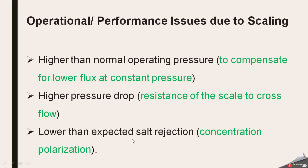Third, lower than expected salt rejection due to concentration polarization. Reverse osmosis involves a concentration gradient across the membrane. When high salt concentration is present on the membrane surface and low salt in the permeate side, more salt passes through the membrane, which reduces the quality of the purified water. This is due to concentration polarization across the membrane.